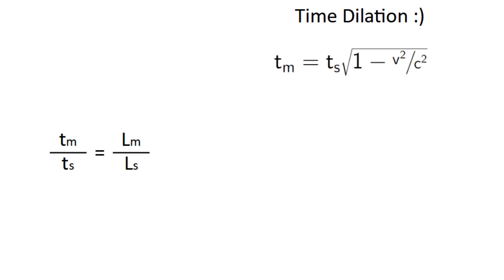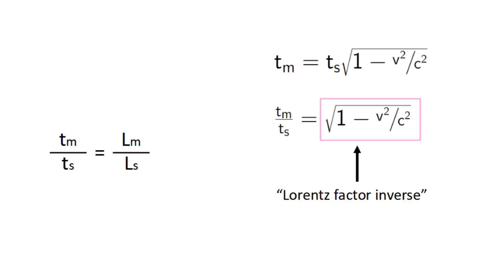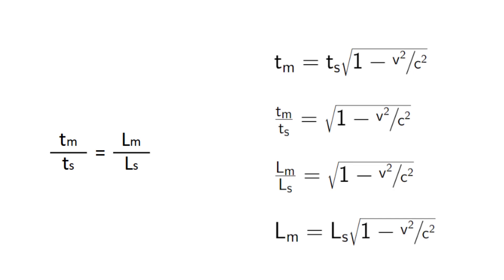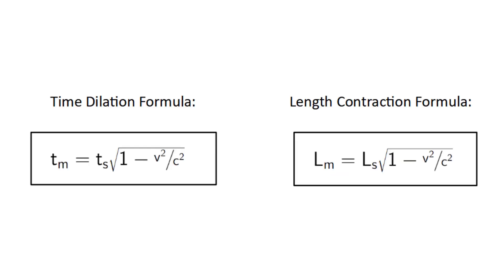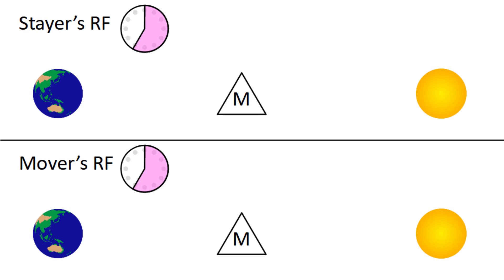And now we can take into account the time dilation equation. If you divide by ts, then it tells you the ratio between the times is just square root of 1 minus v squared over c squared, also known as the Lorentz factor inverse, also known as alpha. And we know the ratio of the distances is the same thing, so we replace tm over ts with lm over ls. Then if we multiply by ls, we get an equation for length contraction that tells you lm in terms of ls. As you can see, it's exactly the same as the time dilation equation, but with distances instead of times. In other words, in the mover's perspective, the time it takes to reach the star is shortened by some amount. But the distance to the star is also shortened by the same amount, so the velocity remains the same as before.